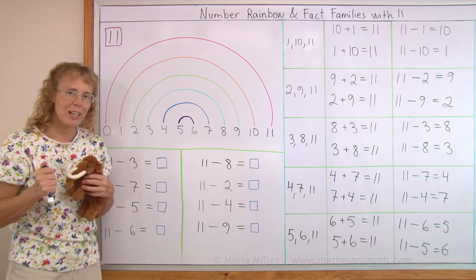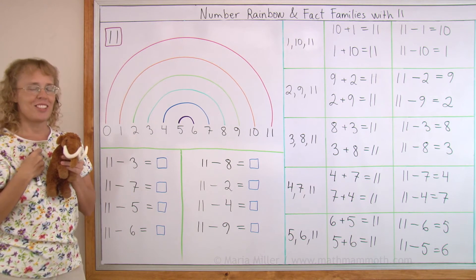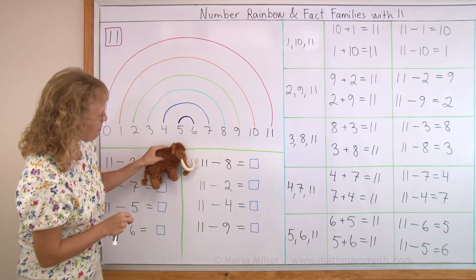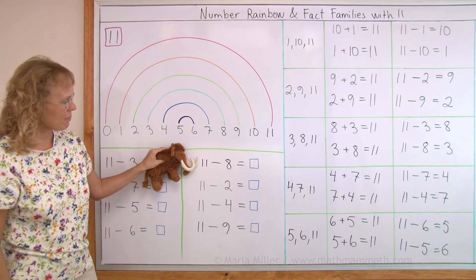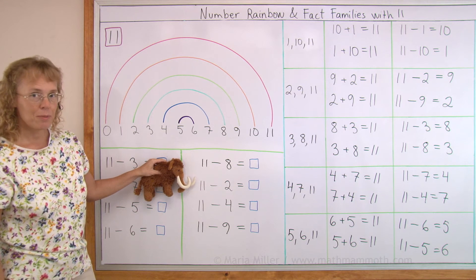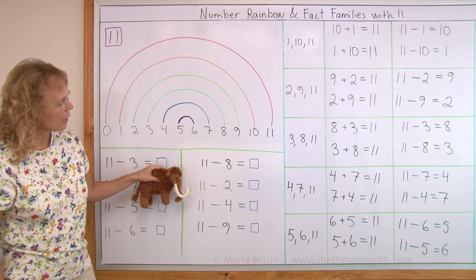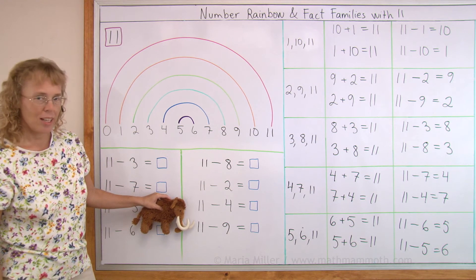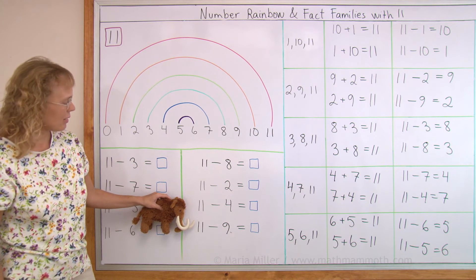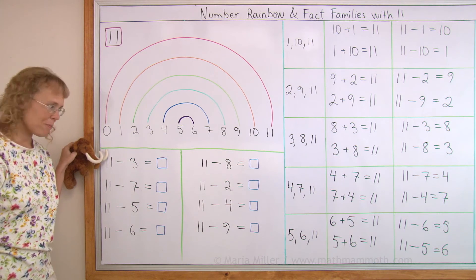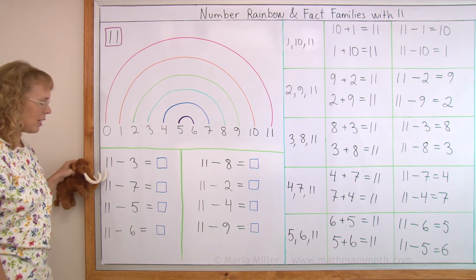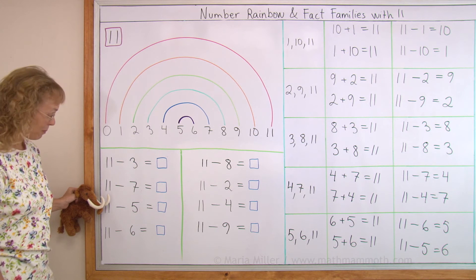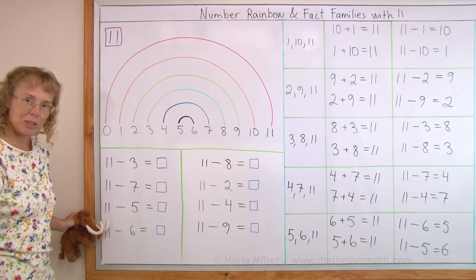Okay. Did you do well? Let's try it once more and I won't say the answers. Okay? Where do you start Mathi? Okay. 11 minus 8? 11 minus 2? 11 minus 4? 11 minus 9? 11 minus 3? 11 minus 7? 11 minus 5? 11 minus 6?